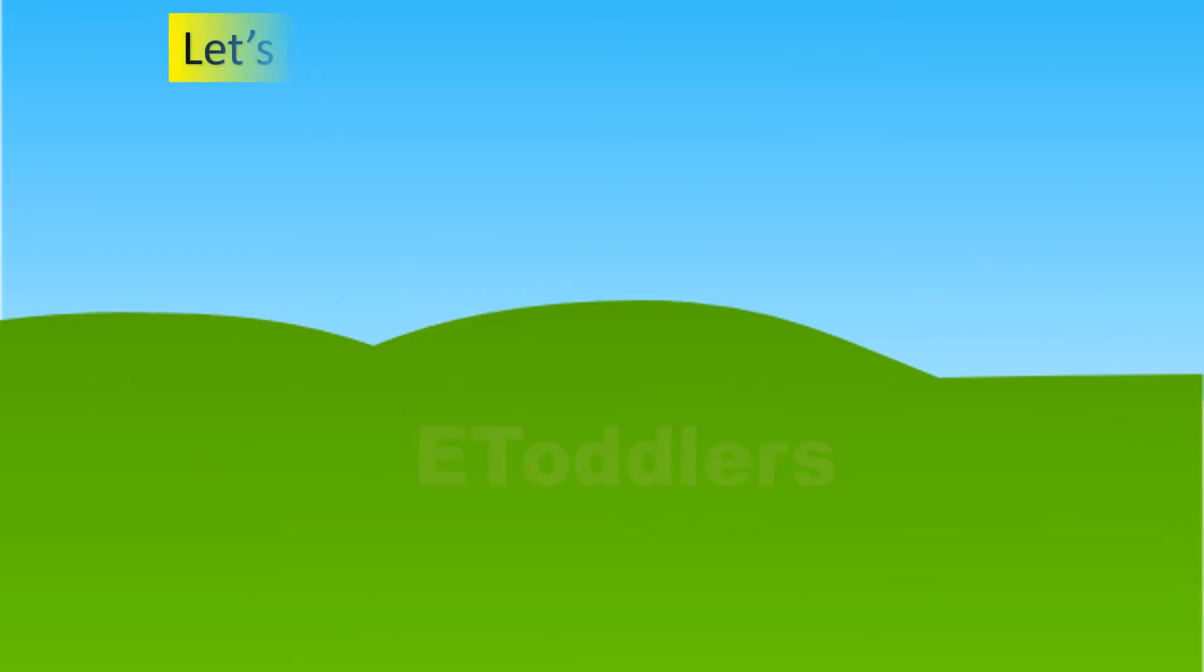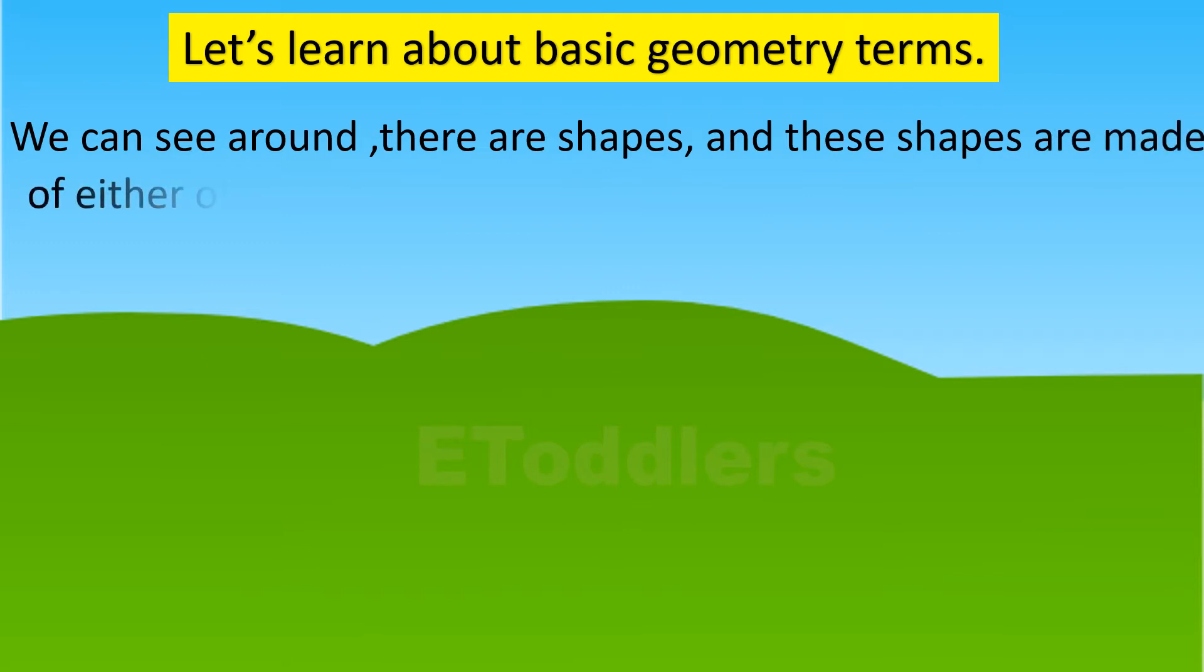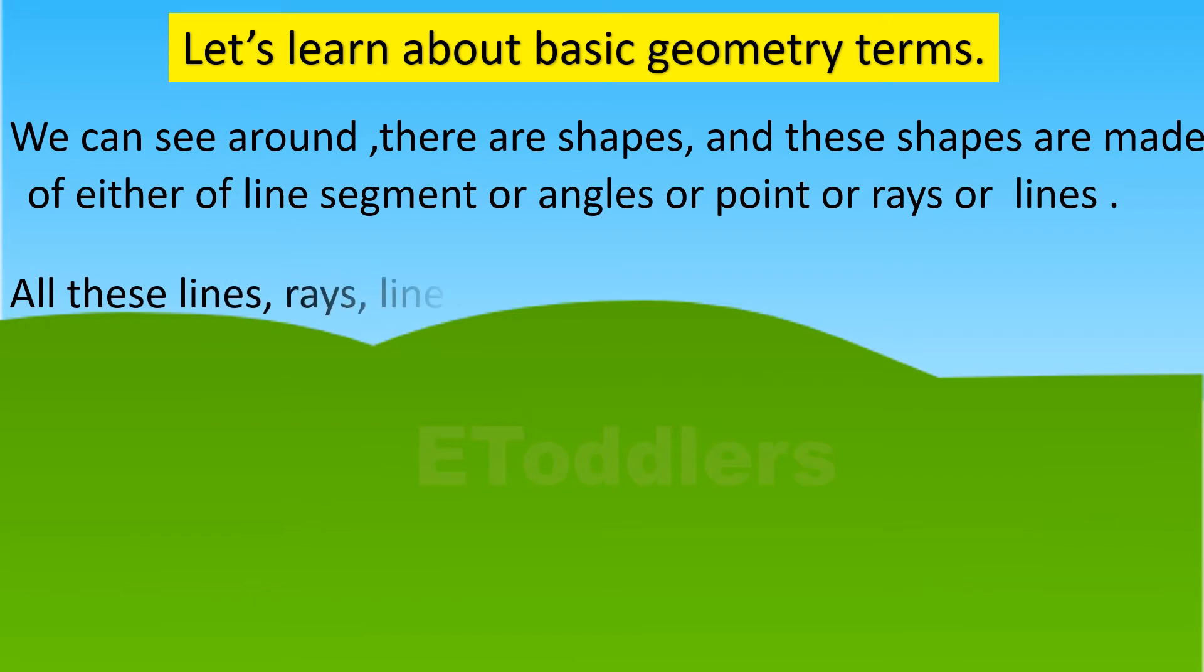Let's learn about basic geometry terms. We can see around us shapes that are made of line segments, angles, points, rays, or lines. All these lines, rays, line segments, and angles are basic geometry terms.